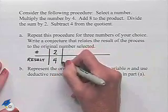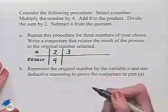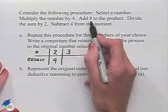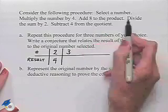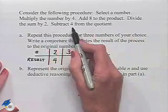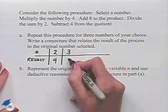Let's choose another number. I'm just going to go up 1 to 3. Multiply by 4. That gives us 12. Add 8. 12 plus 8 is 20. Divide by 2. 20 divided by 2 is 10. Subtract 4. 10 minus 4 is 6.